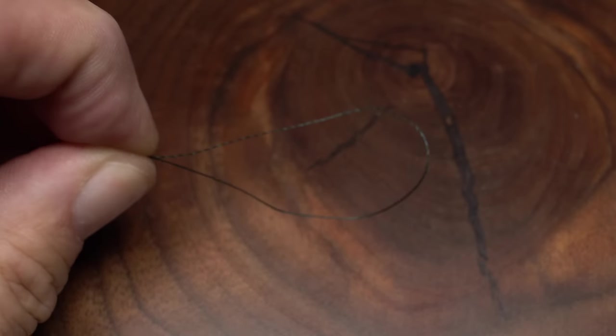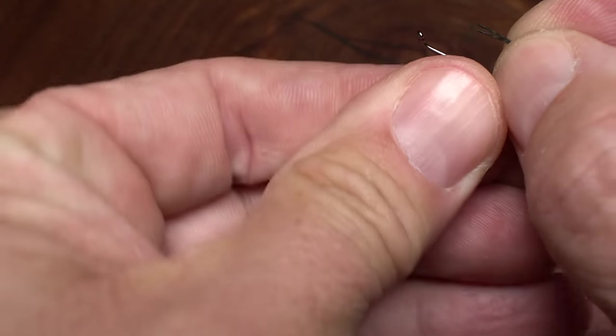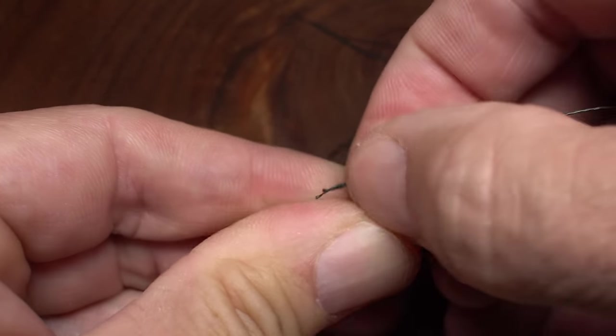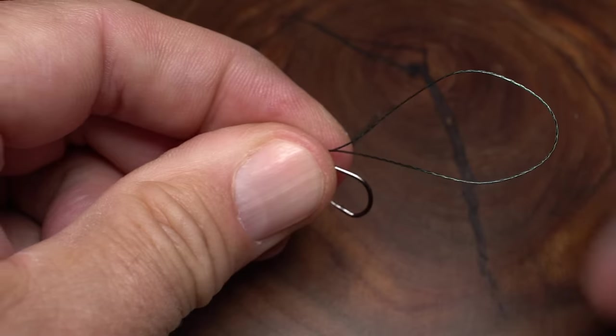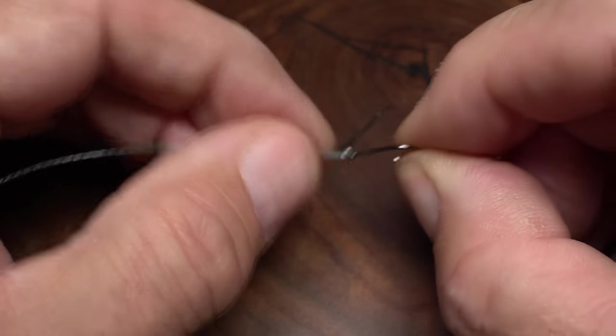Align both ends of the braid to form a loop, then insert those aligned ends from back to front through the hook eye. This will allow you to pull the hook up through the loop and secure it to the braid in handshake fashion.